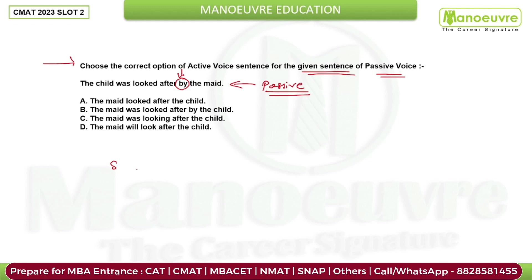In active voice the pattern is: subject, verb, and object. But in passive voice the pattern is: object, verb, and subject. This reversed pattern is what is used in passive voice. Now, what do we need to do with that?